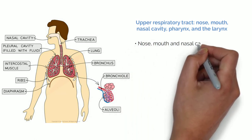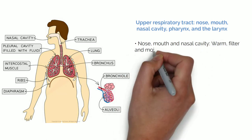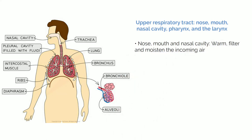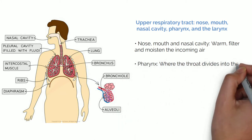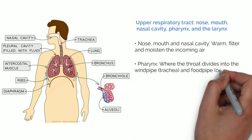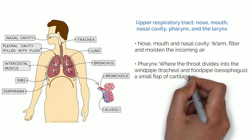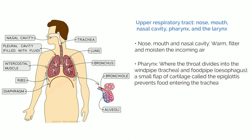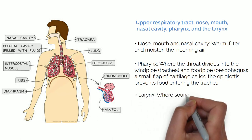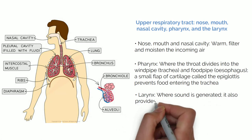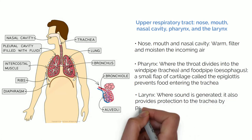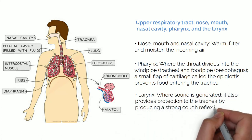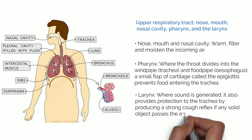The nose, mouth and nasal cavity act to warm, filter and moisten the incoming air. The pharynx is where the throat divides into the wind pipe (trachea) and food pipe (oesophagus). A small flap of cartilage called the epiglottis prevents food entering the trachea. The larynx is where sound is generated. It also provides protection to the trachea by producing a strong cough reflex if any solid object passes the epiglottis.